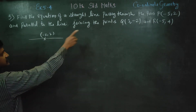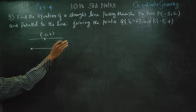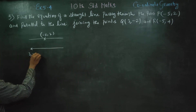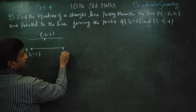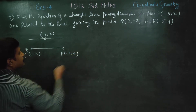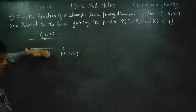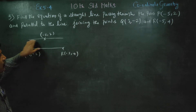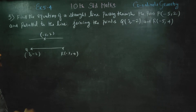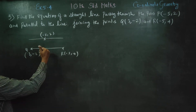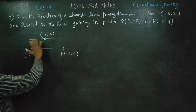This line is parallel to a line joining Q(3, minus 2) and R(minus 5, 4). Since the lines are parallel, their slopes are equal.